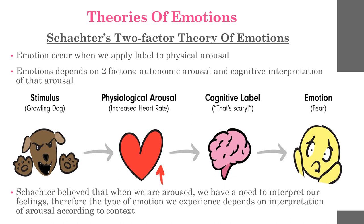The theory would predict that if you met a dog while walking in the bush, you would be aroused. If the dog seemed aggressive, you would interpret your arousal as fear. However, if the dog offered a paw to shake your hand, you would feel happy, amazed, or relieved. Schachter believed that when we are aroused, we have a need to interpret our feelings, and therefore the type of emotion we experience depends on our interpretation of that arousal. He concluded that the conscious experience of physiological arousal and the conscious experience of the meaning of the stimulus situation are equally important integrated components of emotion.